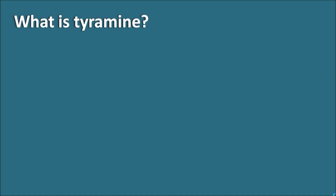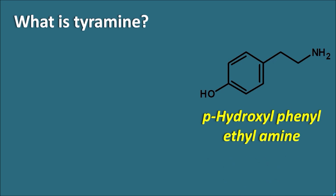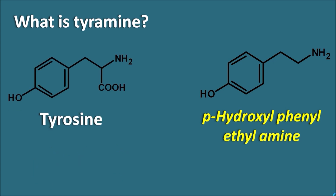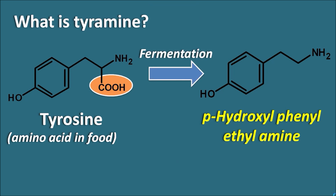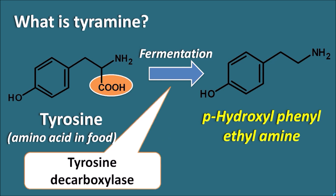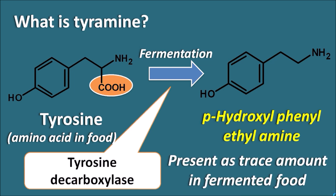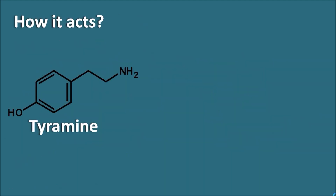Tyramine is chemically para-hydroxyphenylethylamine — a phenylethylamine with a hydroxyl group at the para position. Within food, the amino acid tyrosine is present. Tyrosine has a carboxylic acid on its side chain, which can be converted into tyramine by fermentation of the food. This reaction is mediated by the enzyme tyrosine decarboxylase. So in fermented food, tyrosine may be converted into tyramine, and we can observe trace amounts of tyramine in fermented food.